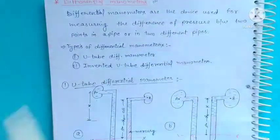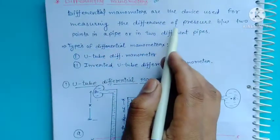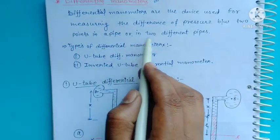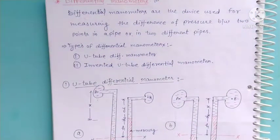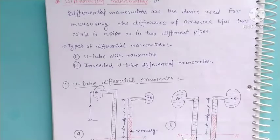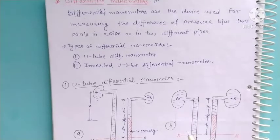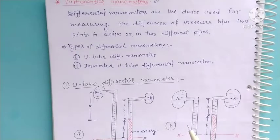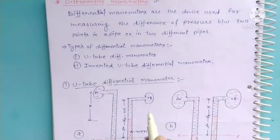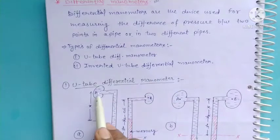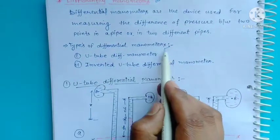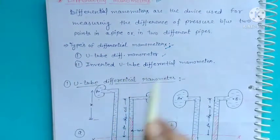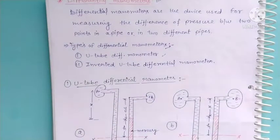Differential manometer are the devices used for measuring the difference of pressure between two points in a pipe or in two different pipes. Differential manometer नाम से ही पता चलता है कि यह एक ऐसा device है जिससे हम दो pipe के दो points का pressure difference measure करते हैं। इसके दो types हैं: U-tube differential manometer और inverted differential manometer।